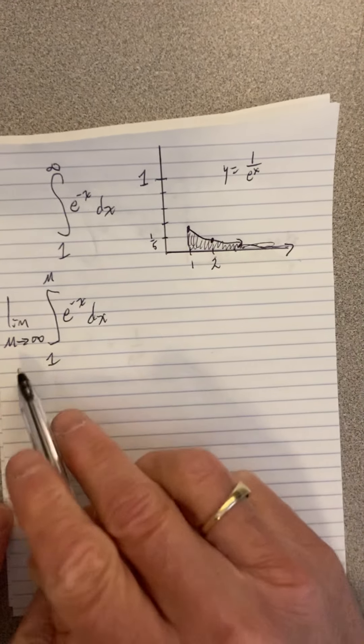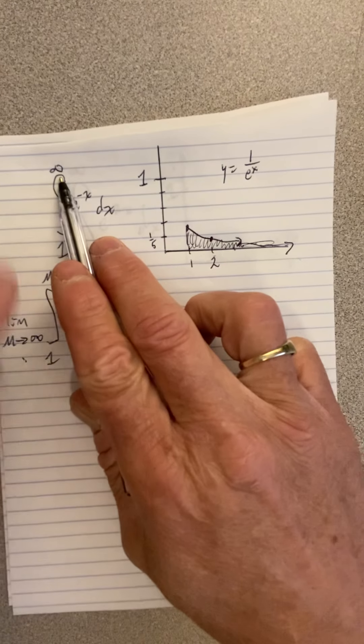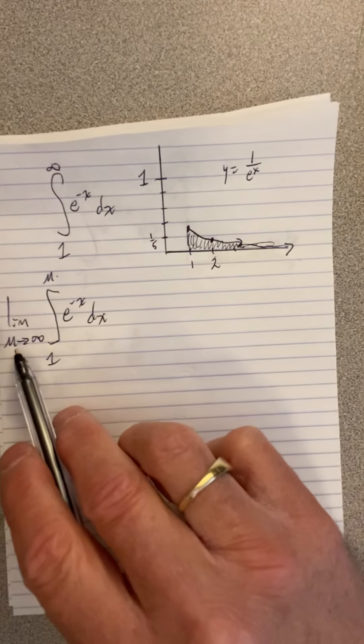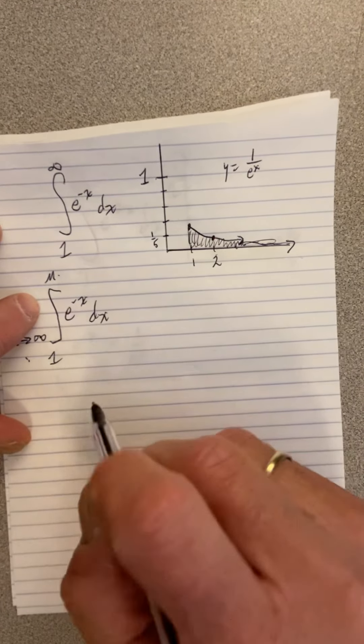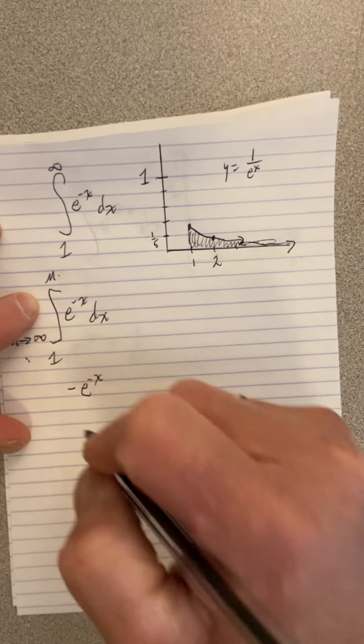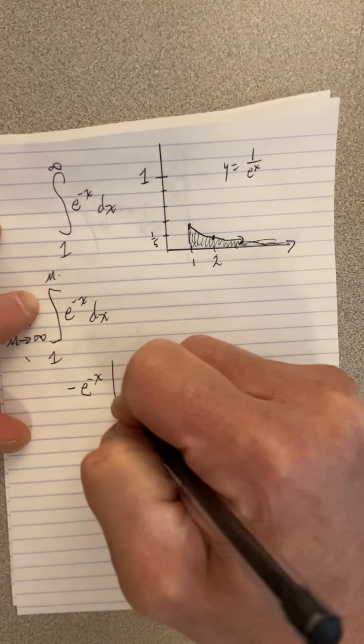Do we want to know, does it converge or diverge? So I've set up the limit where the upper limit of integration is a dummy variable. And we want to know the limit as that dummy variable goes to infinity. So that allows us to integrate this. And we get e to the negative x with a negative out front using the power rule.